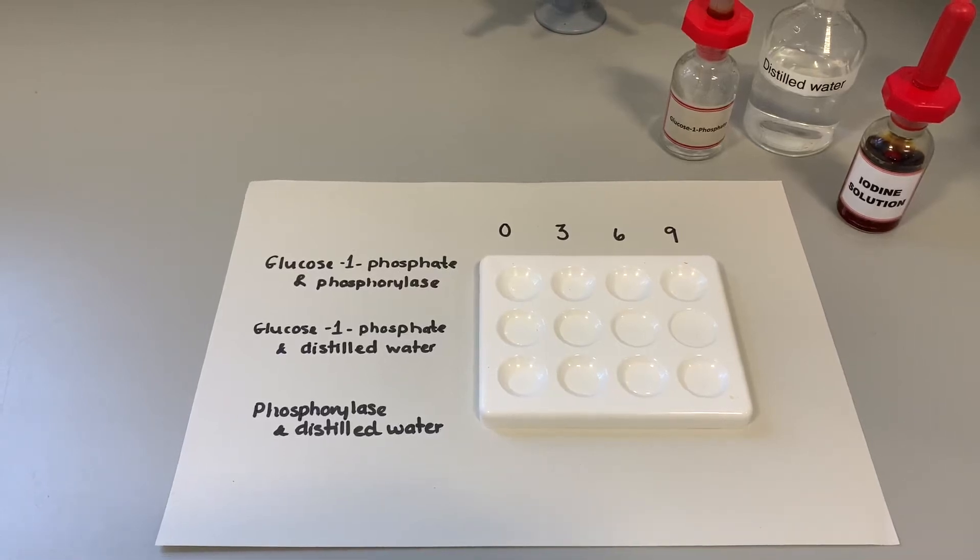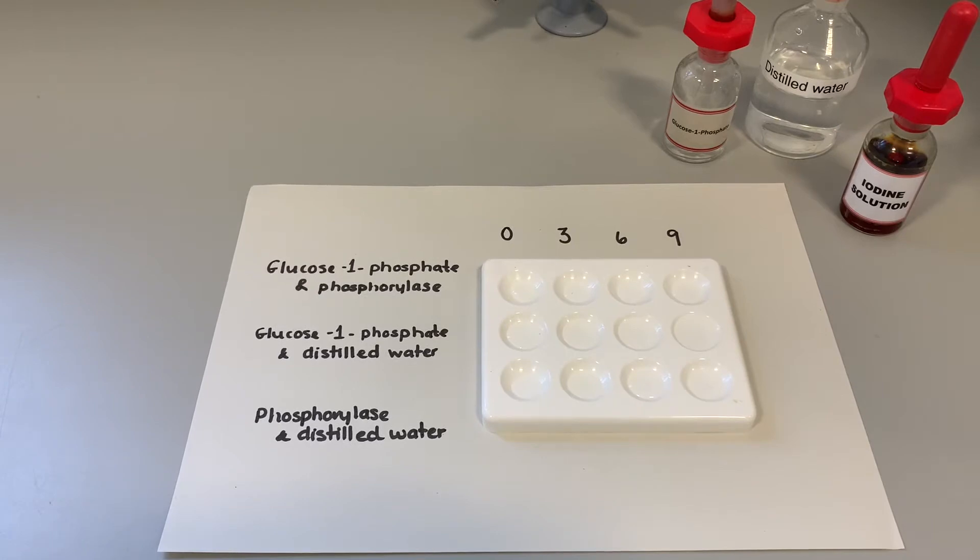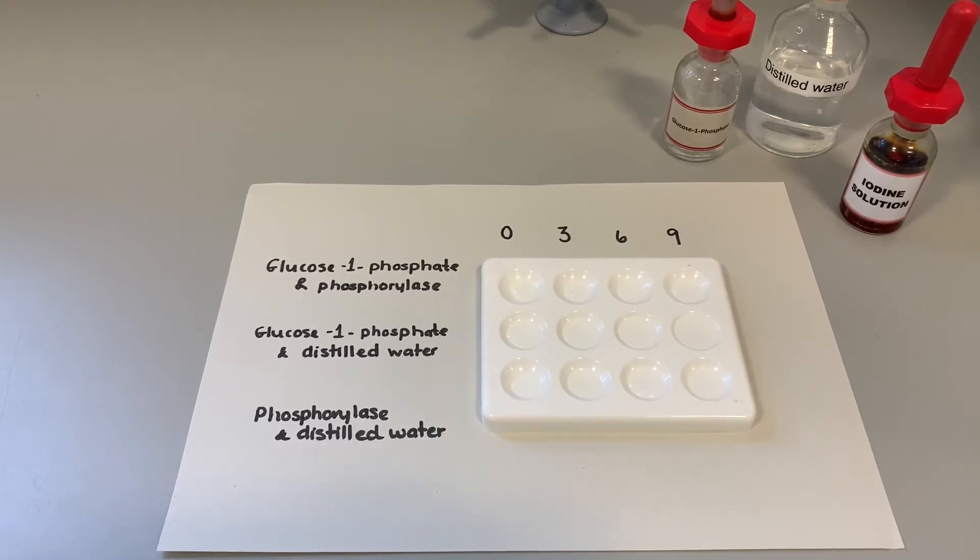In this experiment we're going to be investigating the effect of the enzyme phosphorylase on glucose 1-phosphate. Phosphorylase is what we call a synthesis enzyme. It joins small molecules together to make larger ones, and phosphorylase should join glucose 1-phosphate molecules together to form starch.